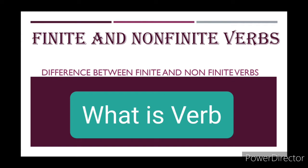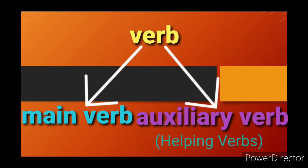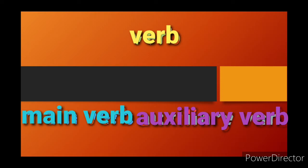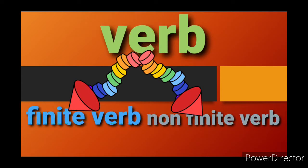Now, division of the verbs. Verbs are mainly divided into two parts: first is main verb, and second is auxiliary, also known as helping verbs. Here is one more division of the verb: verbs are divided into two parts — first is finite verb and second is non-finite verbs.